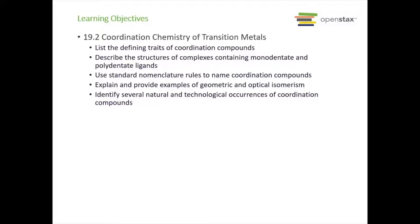Welcome back. We're now on section 19.2, Coordination Chemistry of Transition Metals. In this section we are going to list the defining traits of coordination compounds, describe the structures of complexes containing monodentate and polydentate ligands, use standard nomenclature rules to name coordination compounds, explain and provide examples of geometric and optical isomerism, and identify several natural and technological occurrences of coordination compounds.